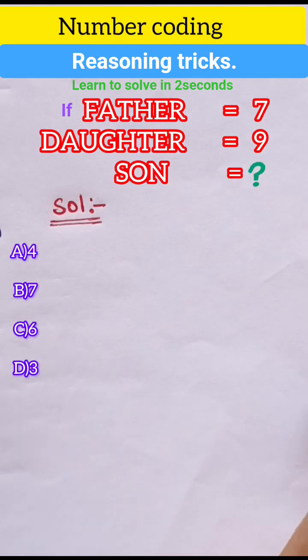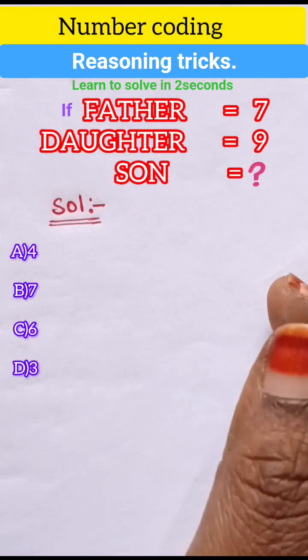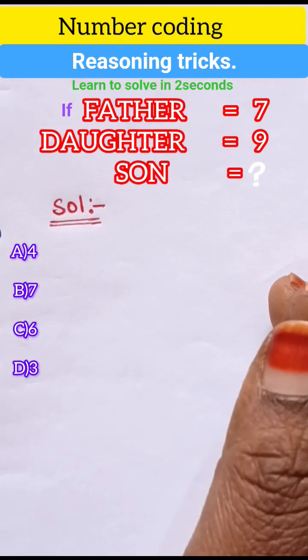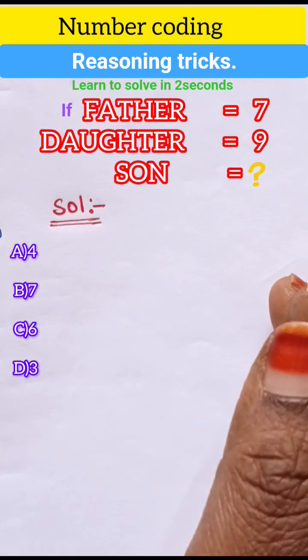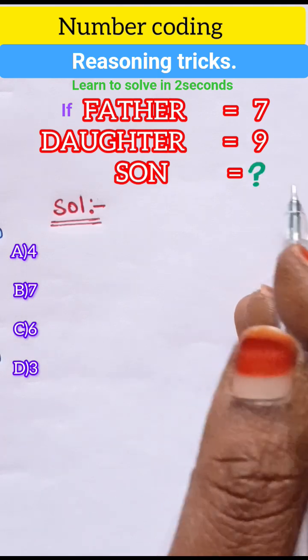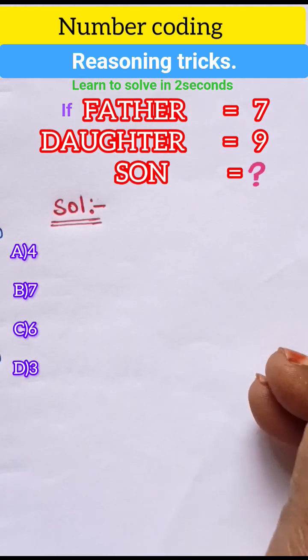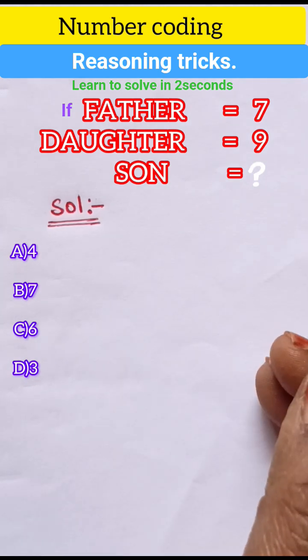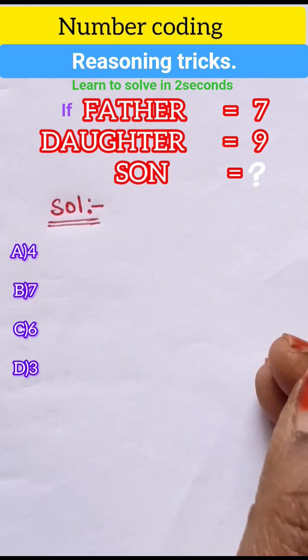Hi, and the number coding reasoning questions. Father equals to 7 and daughter equals to 9 and son equals to question mark. Find out the value. So solutions.